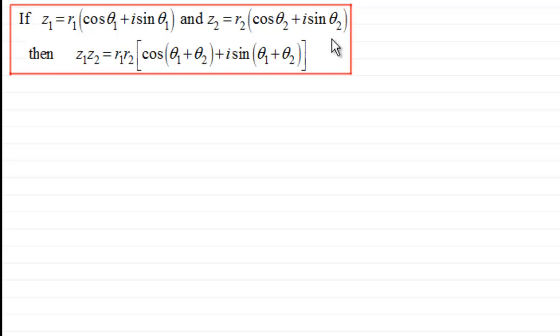Then the product of Z1 and Z2 was equal to R1 times R2, all multiplied by the cosine of θ1 plus θ2, plus i sine θ1 plus θ2. What happened was that we multiplied together the individual modulus for each of the complex numbers and we added together the argument for each of the two complex numbers.